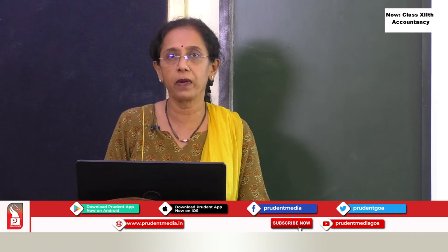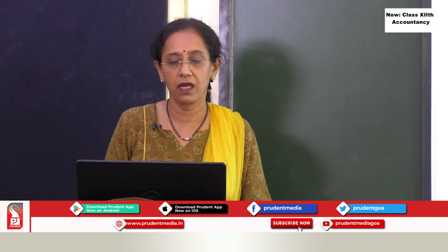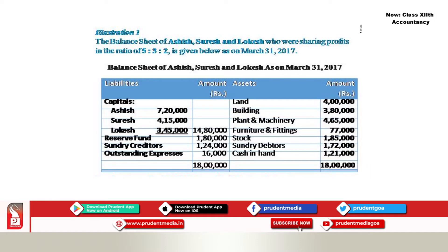Now let us see the full problem on retirement of a partner — in your examination you will get a 10-marks problem. In this problem, there are three partners: Ashish, Suresh and Lokesh, sharing profits in the ratio of 5:3:2. This is the old profit sharing ratio. You are given a balance sheet of Ashish, Suresh and Lokesh showing liabilities — capital accounts, reserves, creditors and outstanding expenses — and assets including land, buildings, plant and machinery, furniture, stock, debtors, and cash in hand.